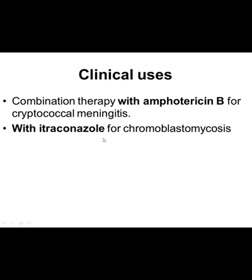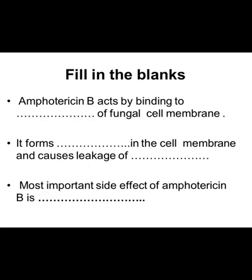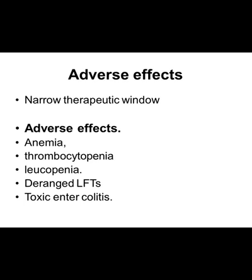Flucytosine causes bone marrow suppression involving anemia, thrombocytopenia, and leukopenia — this is its main adverse effect. It also leads to deranged liver function tests, similar to amphotericin B, and causes toxic enterocolitis. This drug has a narrow therapeutic window, so a slight increase in dosage can lead to toxic effects.